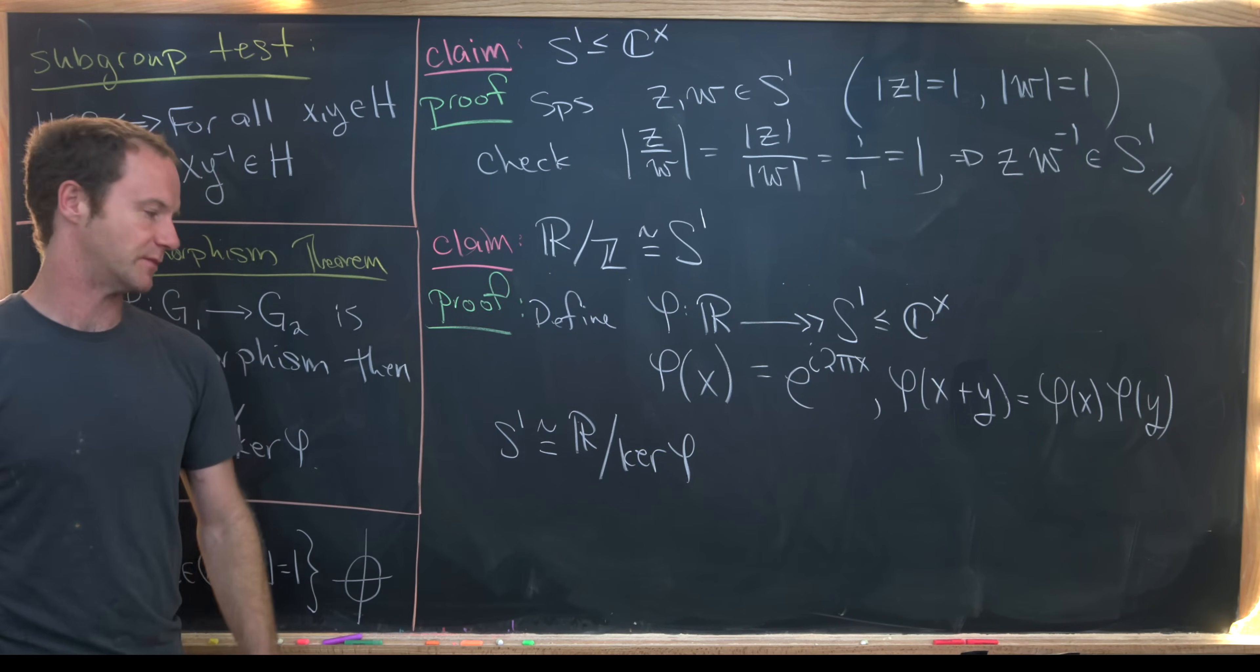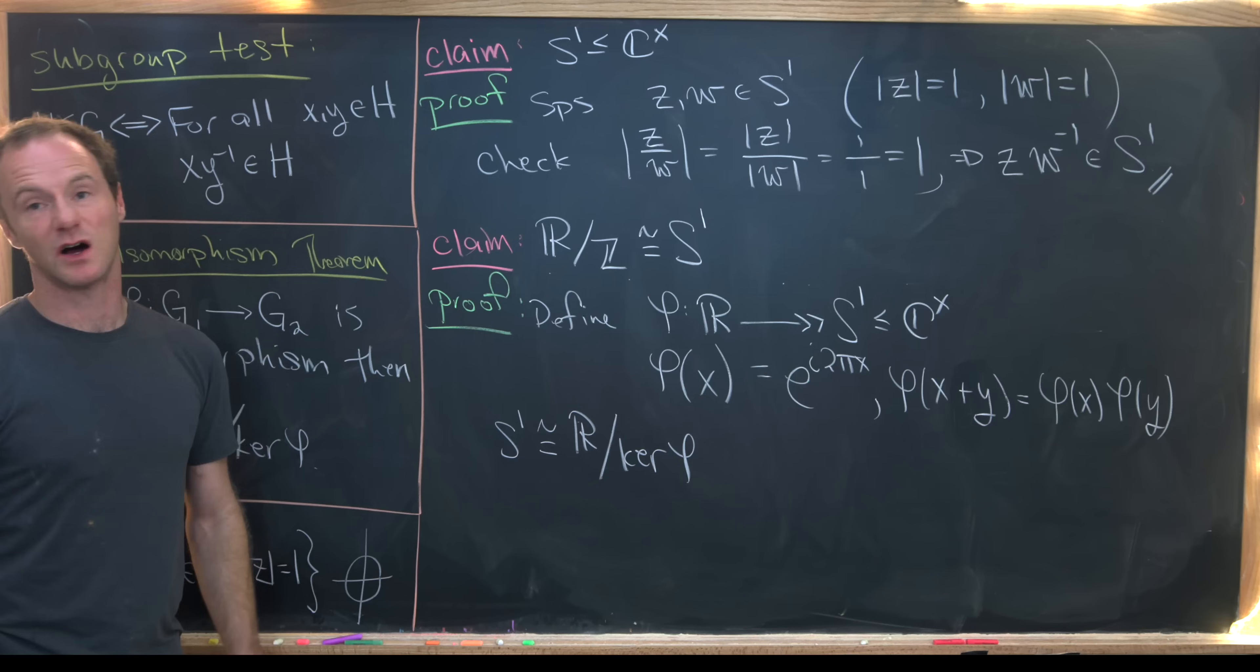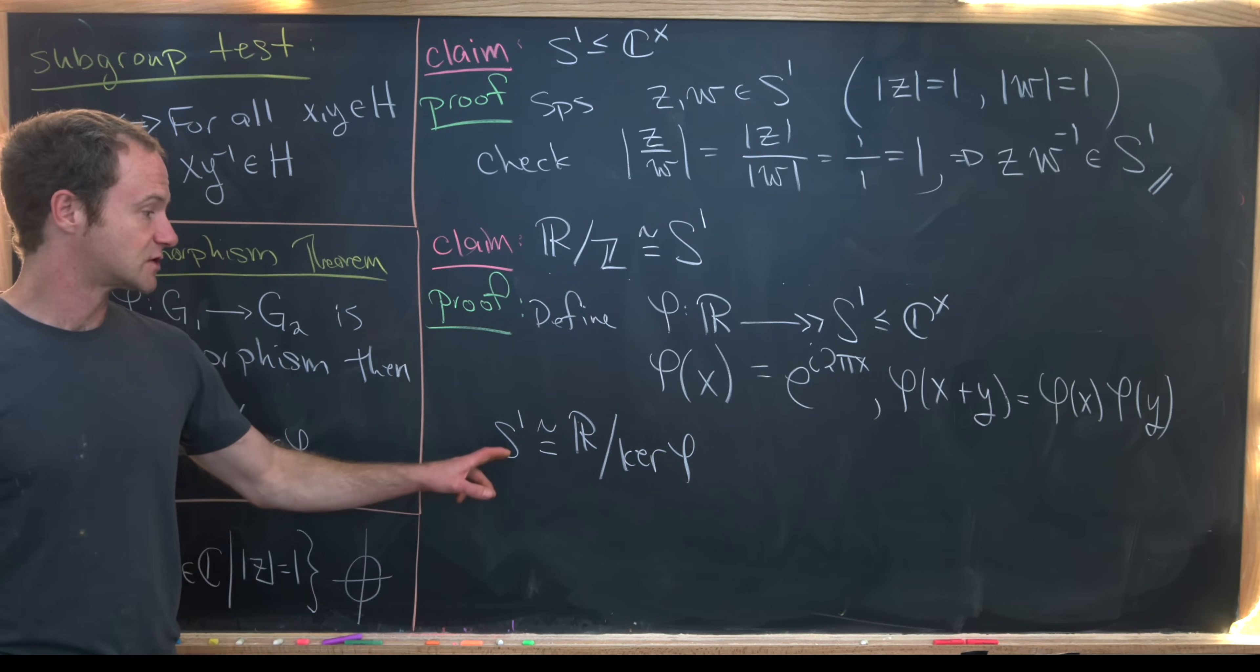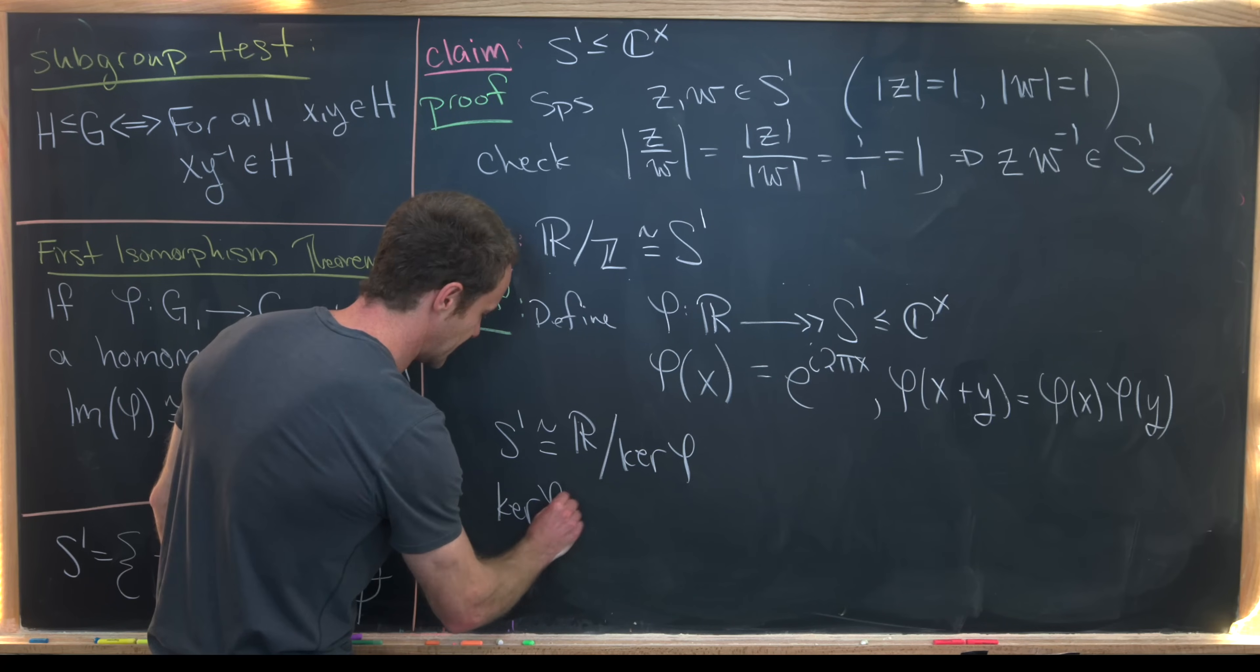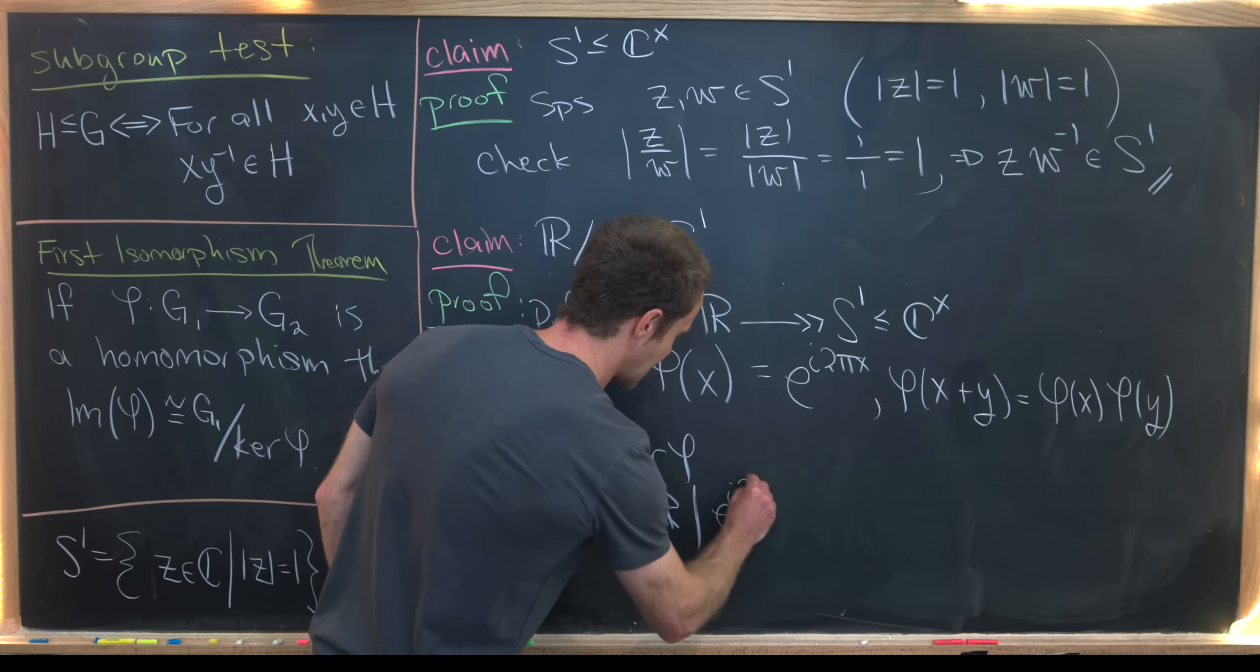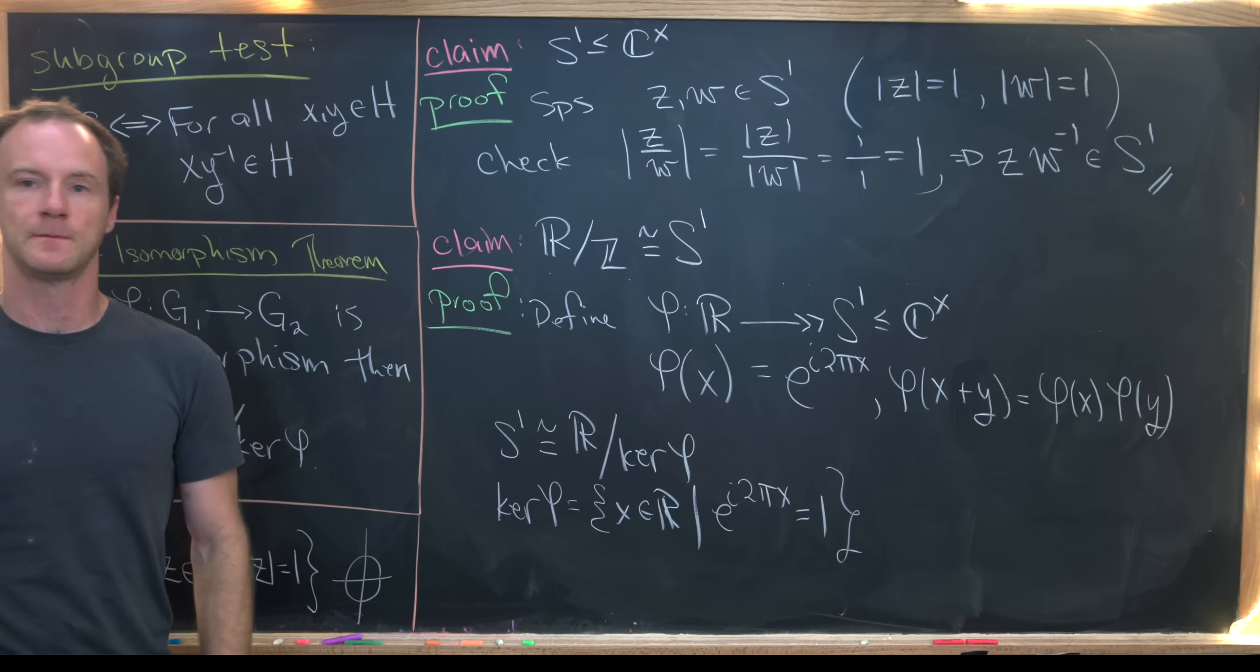So we've just checked that this is a homomorphism. But that tells us that S1 is isomorphic to R mod the kernel of phi. And I've cheated a little bit here. Really, the image of phi is isomorphic to R mod the kernel of phi. But this is clearly an onto homomorphism. So really, all we need to do is figure out what the kernel of phi is. So let's notice that's going to be all real numbers x such that e to the i 2 pi times x is equal to the number 1.